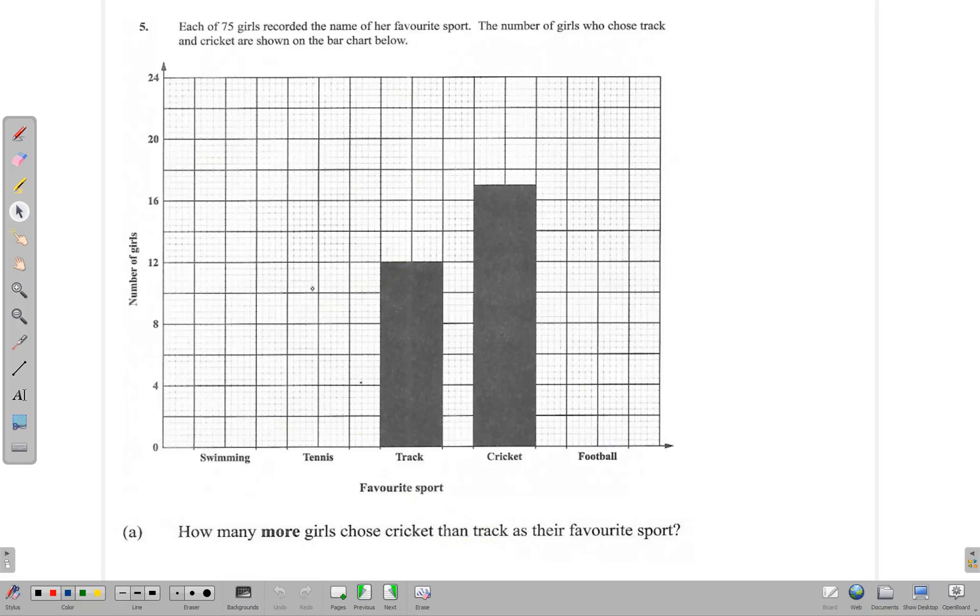The first question is: How many more girls chose cricket than track as their favorite sport? So we need to first identify the numbers here. The number of girls choosing track is 12.